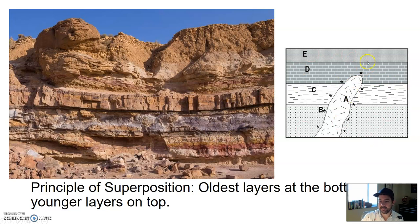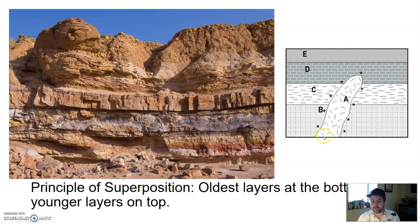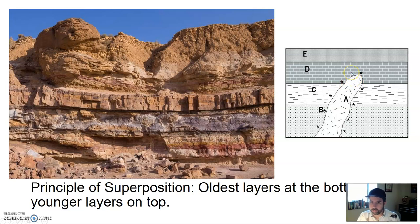Looking at this, it's either A or B that is the oldest, because they're both kind of at the bottom. A looks like it came up and cut through layers that may have already been there, so it seemed to come later. The stars indicate a zone of contact metamorphism, meaning the edges of these rocks have been burnt by A as it cut through. So I'd say B is the oldest.